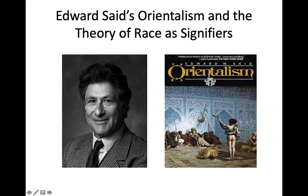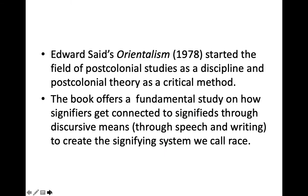This is a book by Edward Said, who is a theorist of orientalism. Said's Orientalism, which was published in 1978, started the field of post-colonial studies as a discipline and post-colonial theory as a critical method. The book offers a fundamental study on how signifiers get connected to signifieds through discursive means — which is through speech and writing — to create the signifying system we call race.